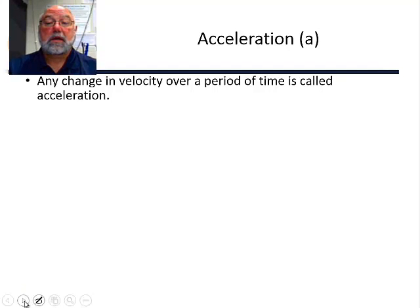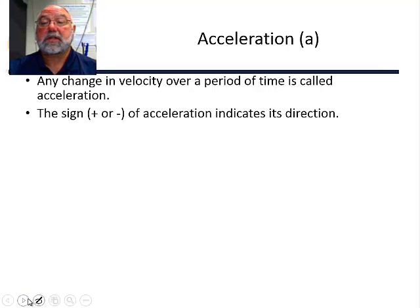Your acceleration can change in a couple of different ways. Your speed, the magnitude of your velocity, can change—it can get faster or slower. Or your direction can change. You can be going at a constant speed but be changing direction, and that is acceleration.